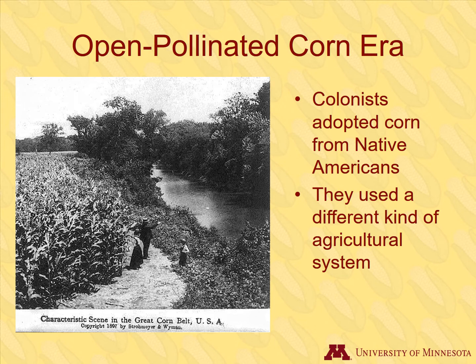When Europeans began colonizing the New World, they adopted corn into their agricultural systems. The colonists learned from the Native Americans how to cultivate indigenous crops like corn, beans, and squash. While colonists learned a great deal from Native Americans, their agricultural systems evolved to the use of monocultures where just a single crop is grown at a time, similar to how things were grown in their native countries. This photo shows a field of corn grown in a monoculture in 1897 in Iowa.